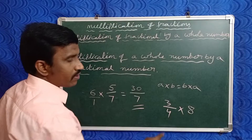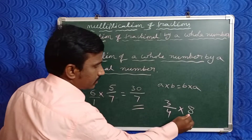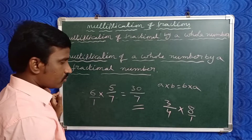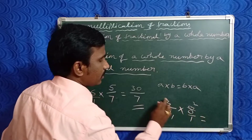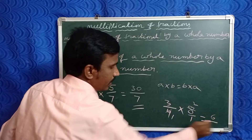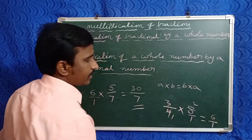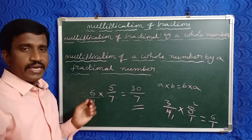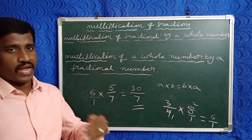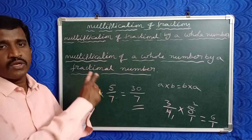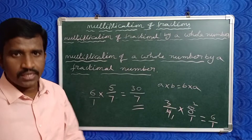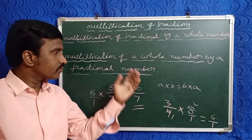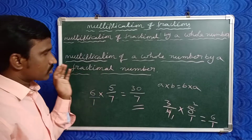Similarly, take another example: three by four into eight. Write the whole number eight as a fraction: eight by one. Now multiply numerators: three into eight, and denominators: four into one. Simplify: four into eight — four twos are eight, so we get six by one, which equals six. The process is: write any whole number as a fractional number, then multiply numerators with numerators and denominators with denominators.